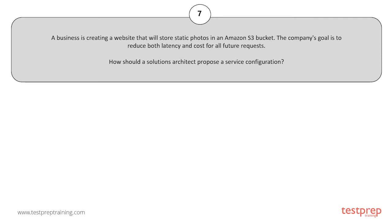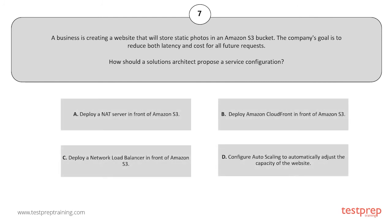Your options are: A. Deploy an AT server in front of Amazon S3. B. Deploy Amazon CloudFront in front of Amazon S3. C. Deploy a Network Load Balancer in front of Amazon S3. D. Configure auto-scaling to automatically adjust the capacity of the website.